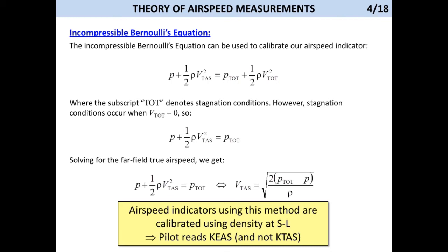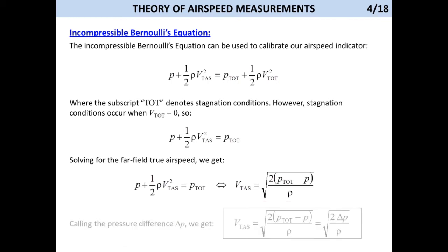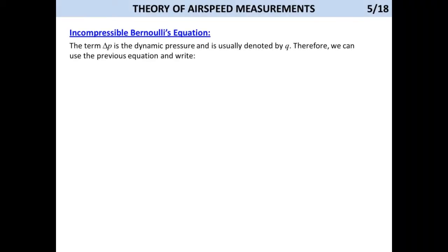And this is precisely what our airspeed indicator does mechanically. Then, let's denote this pressure difference by delta P, and write the true airspeed as shown. The term delta P is the dynamic pressure, and is usually denoted by the letter Q.